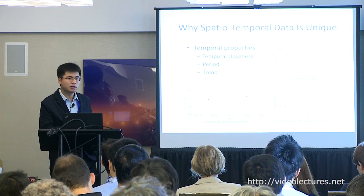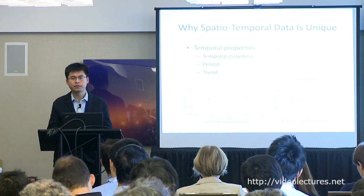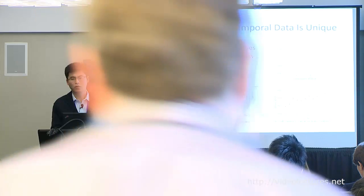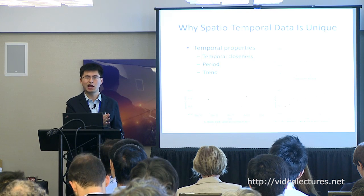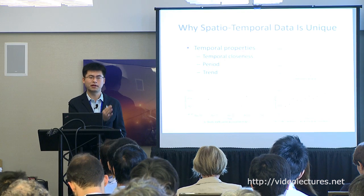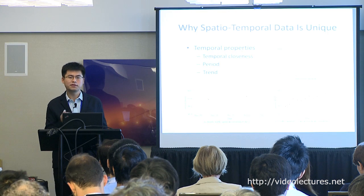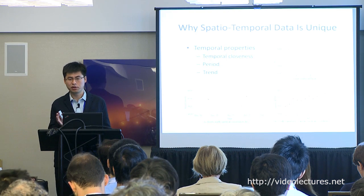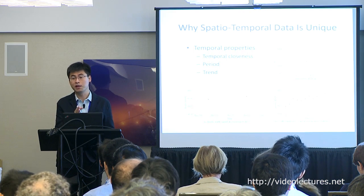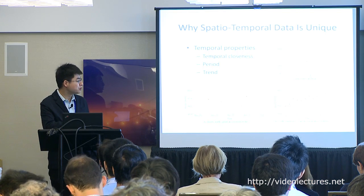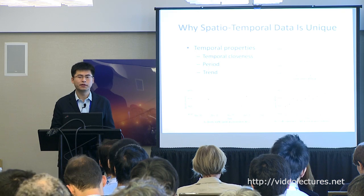But sometimes there are outliers — we call it periodicity. The traffic condition this morning at 8 a.m. may be very similar to the traffic at the same time last week, even though yesterday's noon is chronologically closer. So there is a periodic pattern in the data.